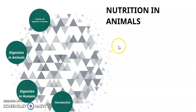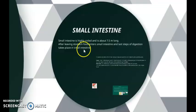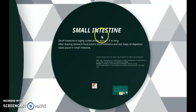Hello everyone. Let's learn about the second part of nutrition in animals. Intestines are of two types: small intestine and large intestine.